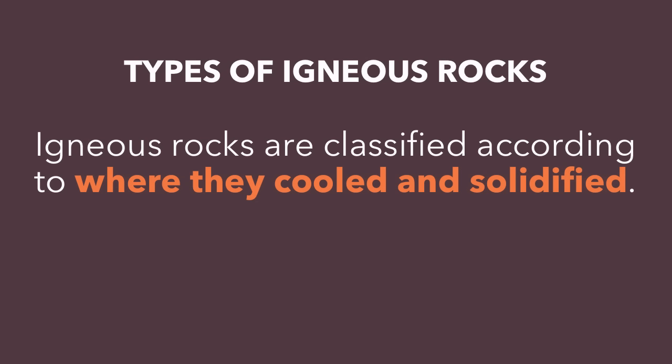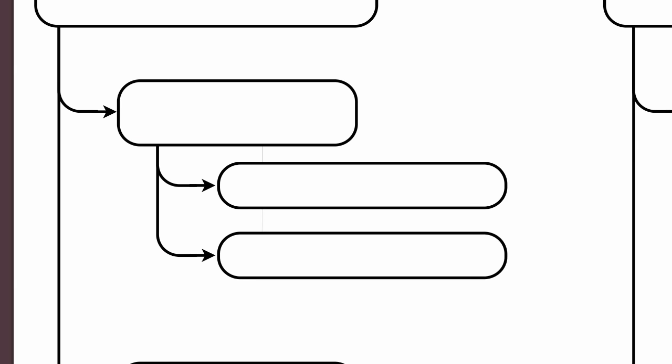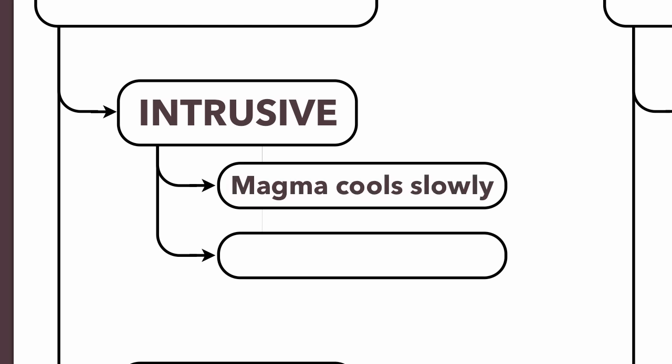And so that gives us two different types of igneous rocks, classified according to where exactly they did their cooling and solidifying. The first type is called an intrusive igneous rock — that means it formed inside the earth from magma. It's pretty hot inside the earth, so that magma is going to cool very slowly. When it solidifies, it allows minerals to form in crystals, and because it happens so slowly, those crystals are able to grow very large. Intrusive rocks always have very large crystals.